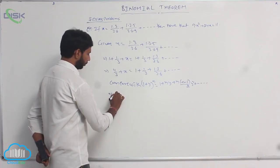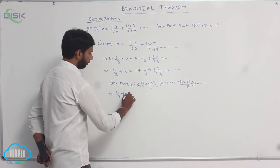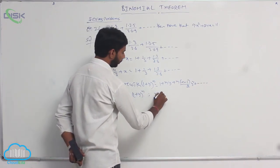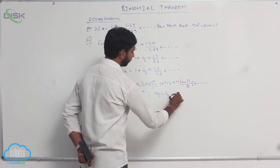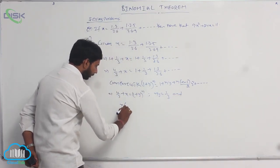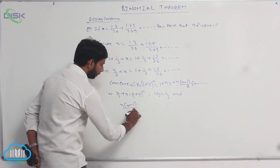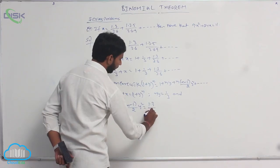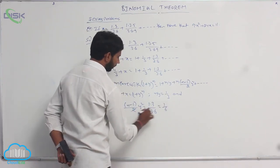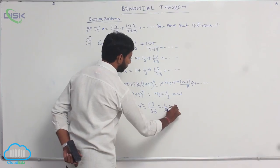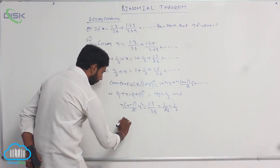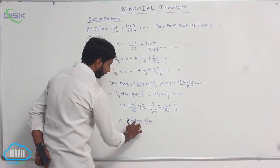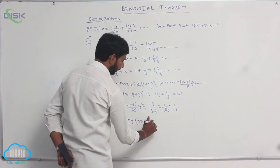That implies 4/3 + x is equal to (1 + y)^n, and ny = 1/3, and n(n−1)/2 · y² = 1/6. This simplifies: n(n−1)y² = 1/3, which can be written as ny(ny − y) = ny(ny − y) = 1/3.